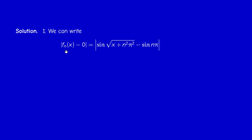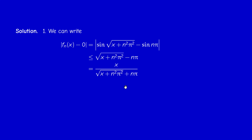For pointwise convergence: sin(nπ) = 0, so |fₙ(x) − 0| = |sin(√(x + n²π²)) − sin(nπ)|. By the hint, |sin a − sin b| ≤ |a − b|. We can drop the absolute value since x is positive, and multiplying by the conjugate expression √(x + n²π²) + nπ, we simplify to get x divided by (√(x + n²π²) + nπ), which converges to zero as n → ∞ since the denominator tends to infinity. So fₙ converges pointwise to 0.